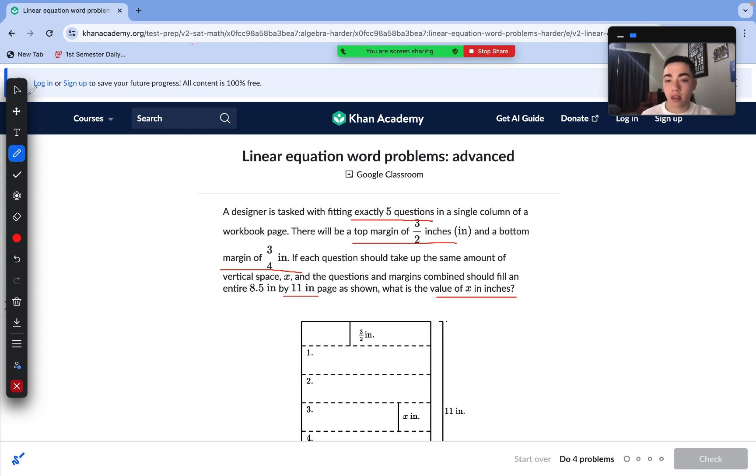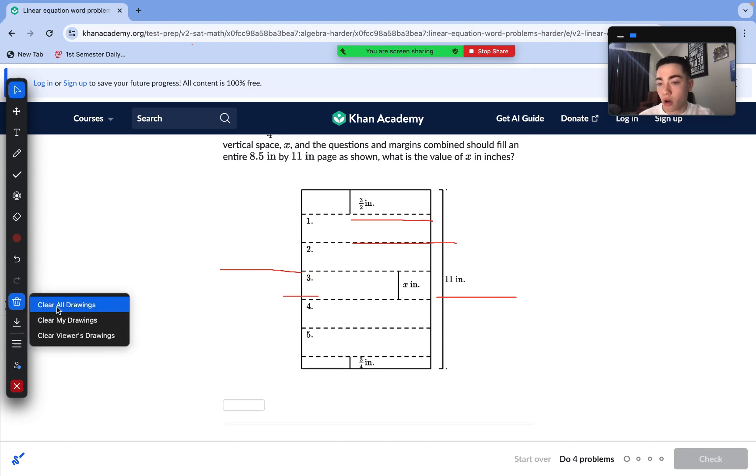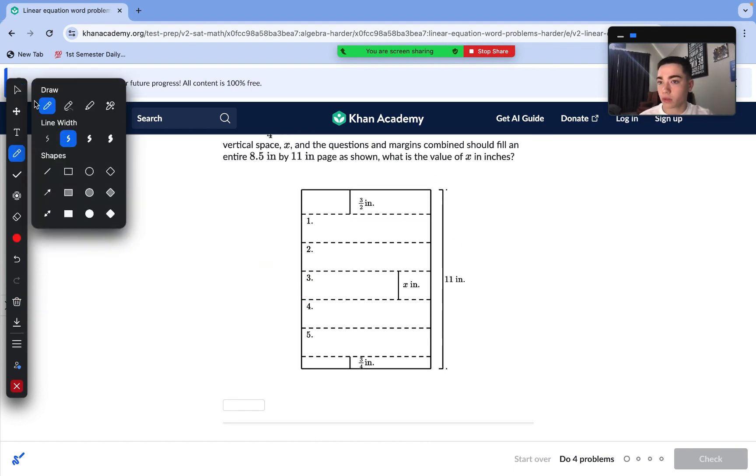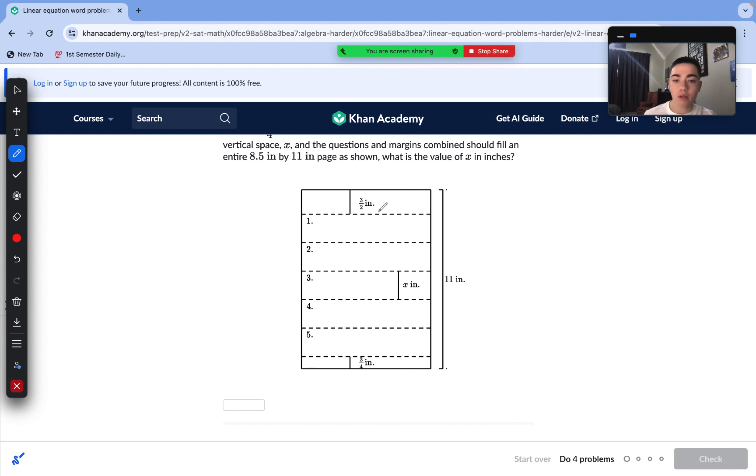As you can see here, we're only dealing with vertical numbers. Our diagram is very helpful here. We're trying to find x, this value, and let's just start by creating our linear equation. We can see there is a total of 11 inches, so that's going to be on our right side of our equation by itself.